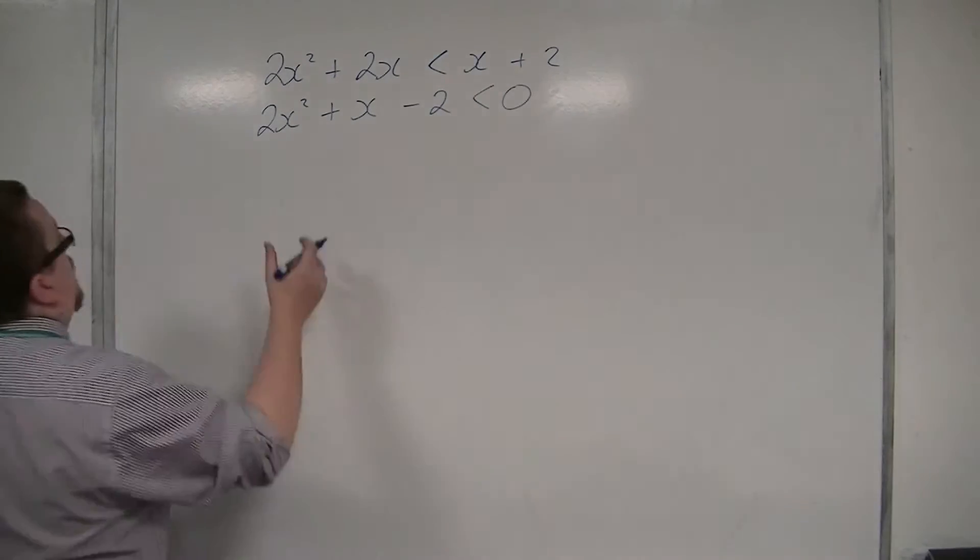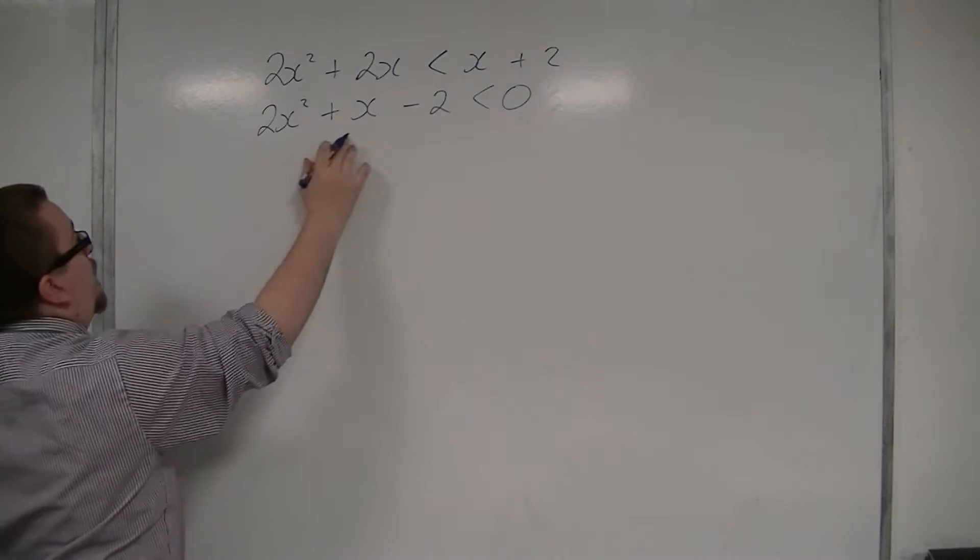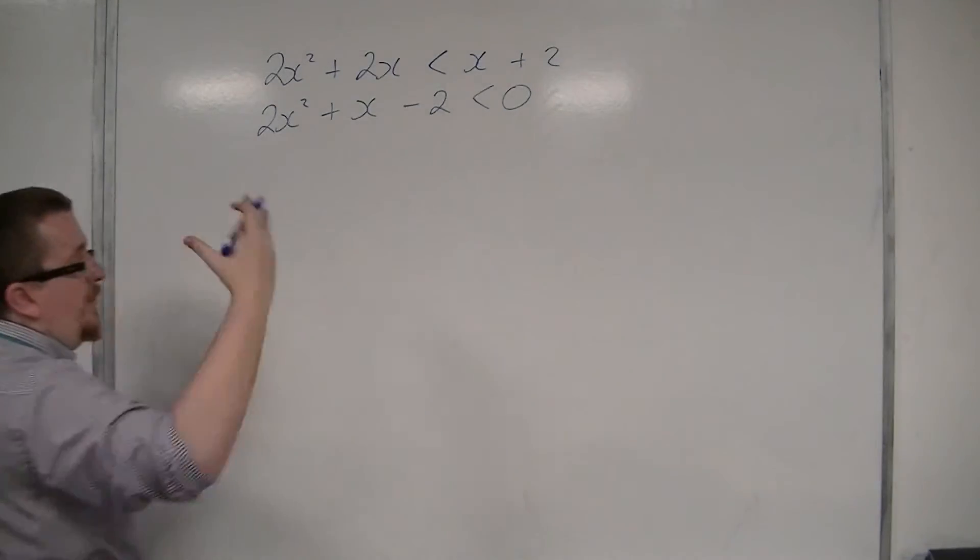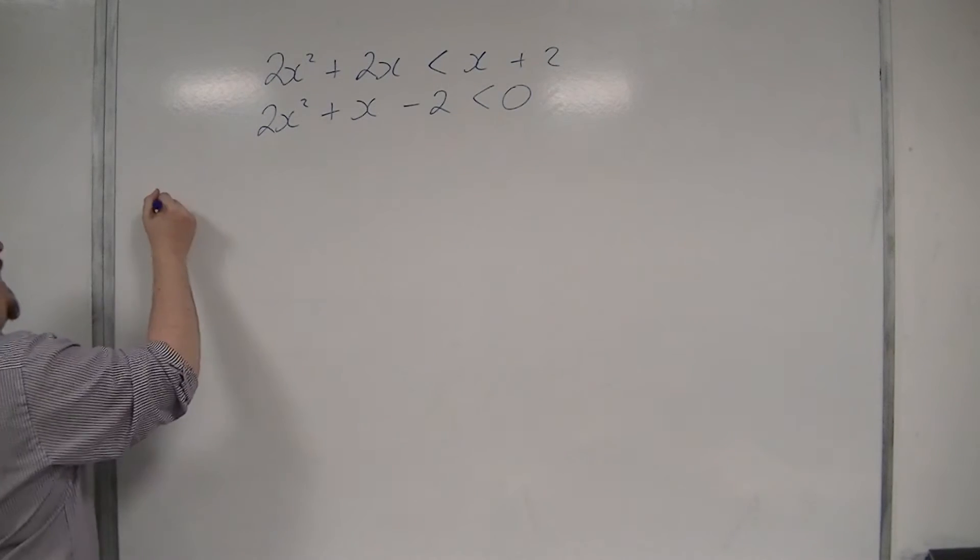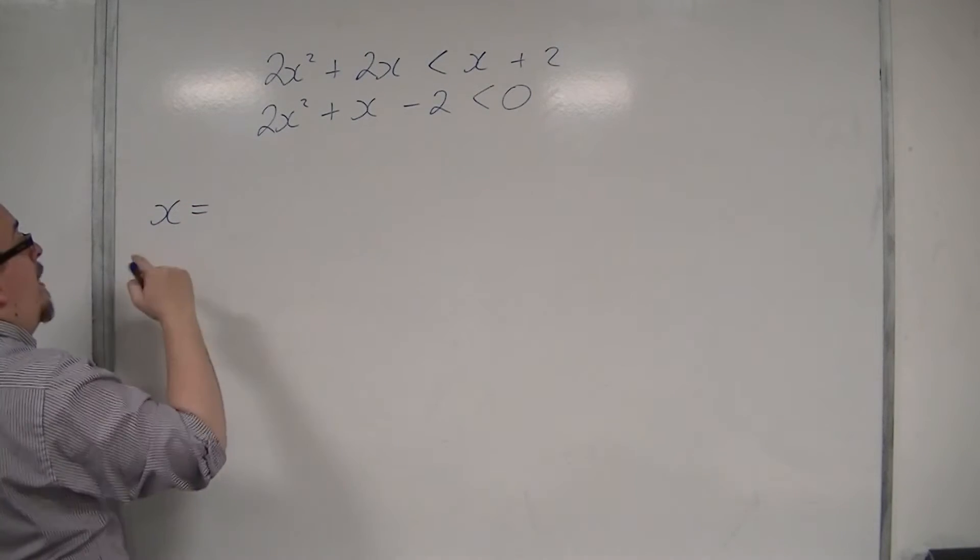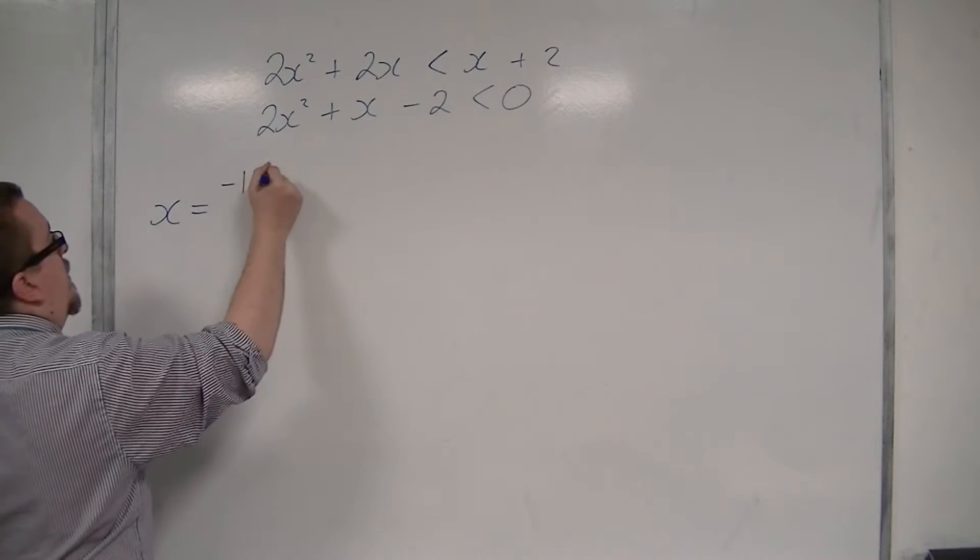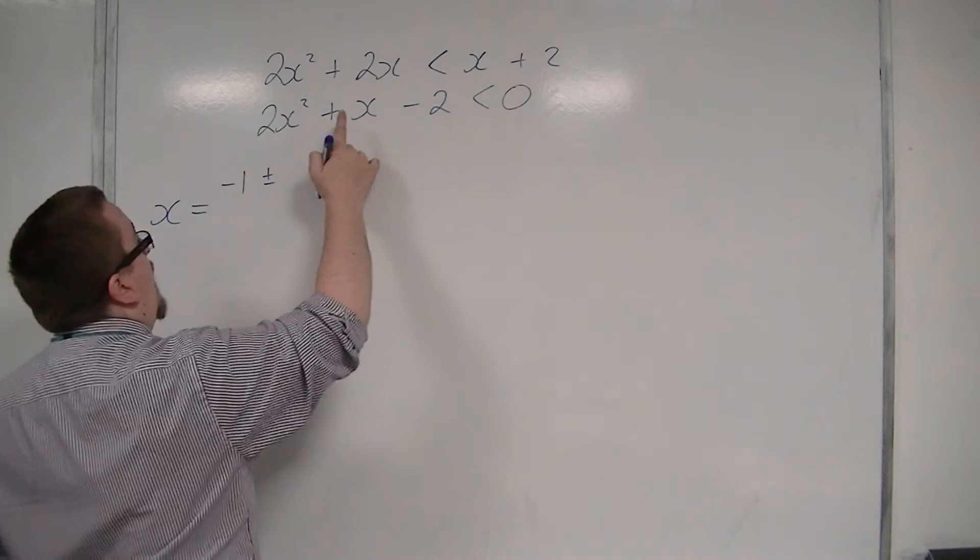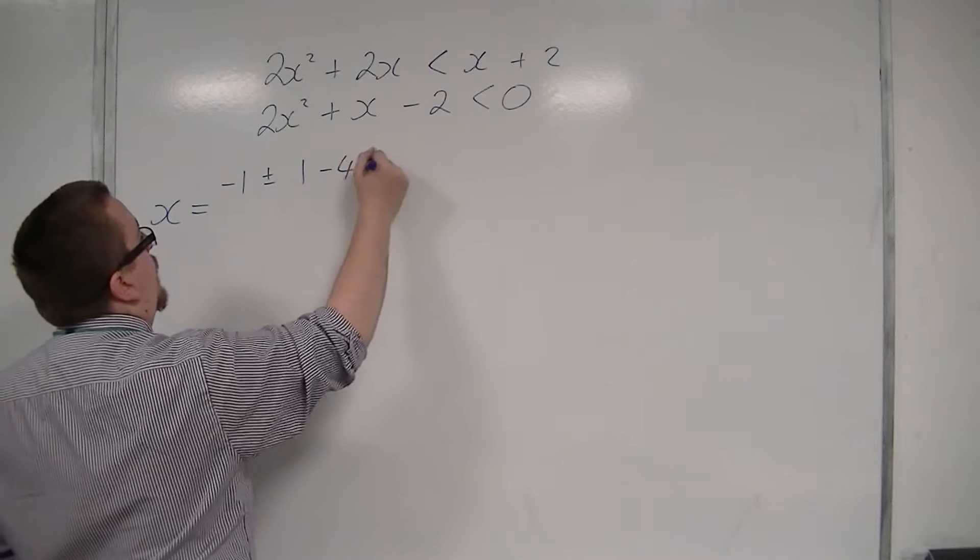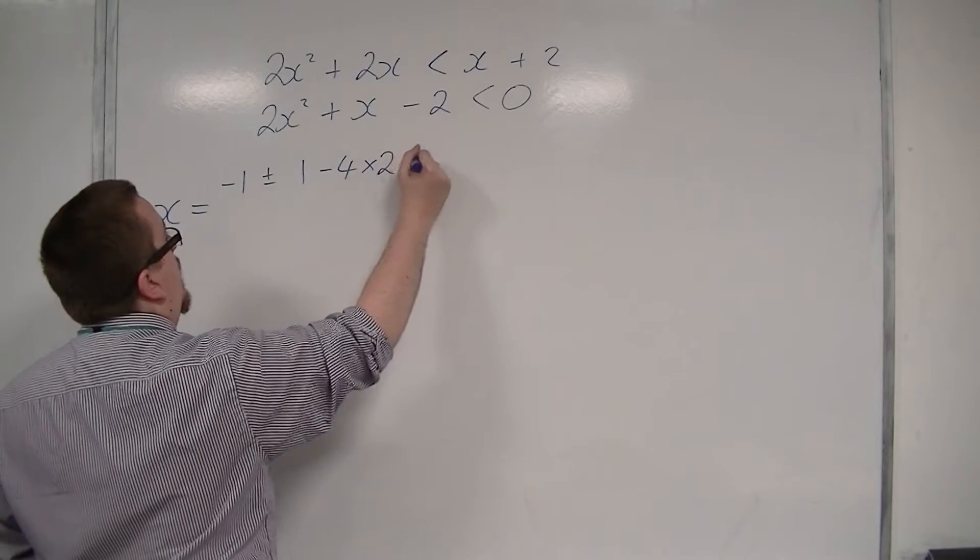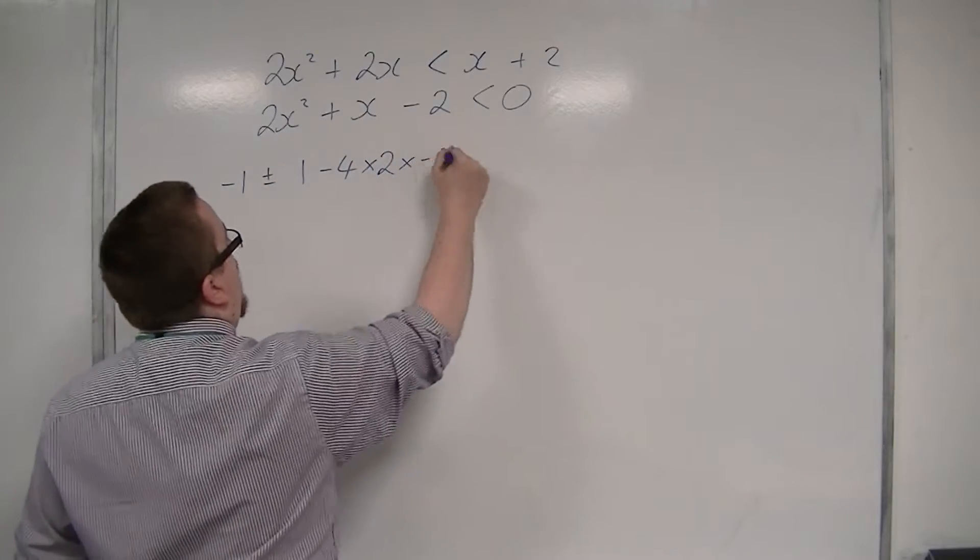I'm going to solve 2x² + x - 2 = 0. So x will be equal to minus b, so minus 1, plus or minus the square root of b², which is 1, take away 4 times a, which is 2, times c, which is minus 2. Square root that, all over 2 times 2.